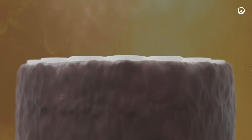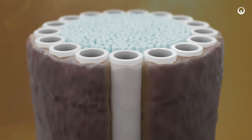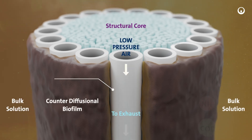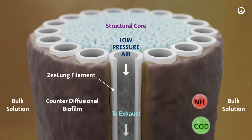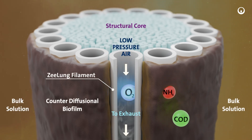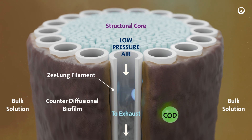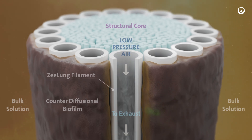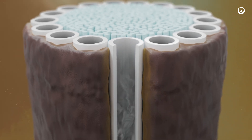Low pressure air is delivered to the ZLUNG filaments. Unlike conventional aeration systems that use bubbles, ZLUNG transfers oxygen by molecular diffusion, without bubbles, resulting in a four times reduction in energy required for oxygen transfer.